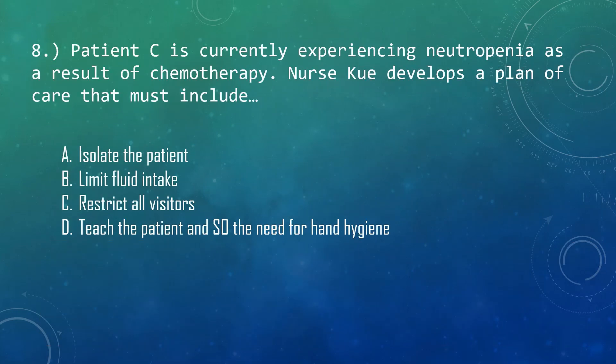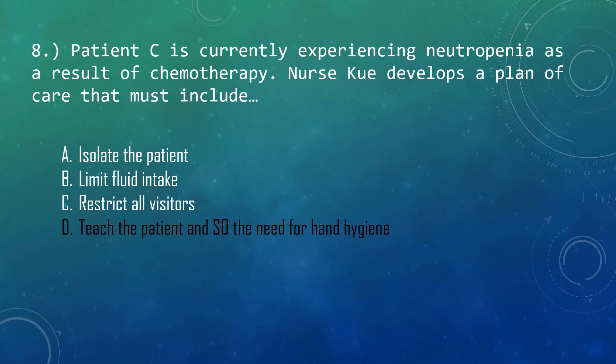Question 8: Patient C is currently experiencing neutropenia as a result of chemotherapy. Nurse Koo develops a plan of care that must include meticulous hand hygiene education, which is important for a neutropenic patient. Not all visitors are restricted, but the patient is protected from persons with known infections. Fluids should be encouraged and it is not advisable to isolate the patient.